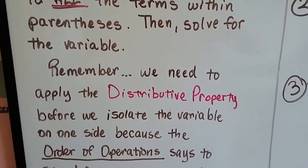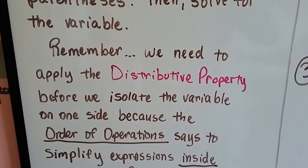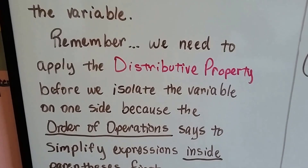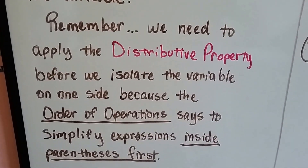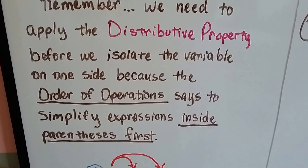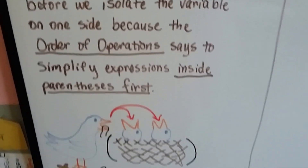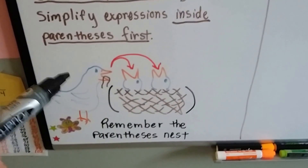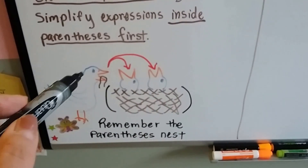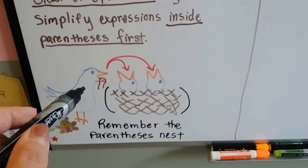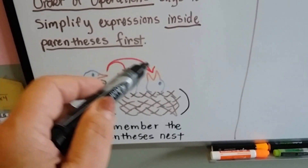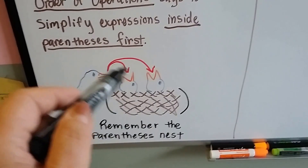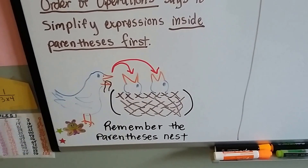Remember, we need to apply the distributive property before we isolate the variable to one side, because the order of operations says to simplify expressions inside parentheses first. Think of it this way: the number outside is like a mother bird, and she takes turns feeding each one inside. She doesn't skip one — she makes sure each one gets one piece of food.